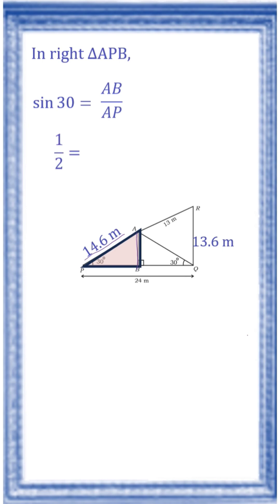We know AP. Sin 30 is half, AP is 14.6. So AB is equal to 7.3. So AB is equal to 7.3 meter. So height of the tower AB is equal to 7.3 meter.